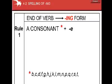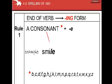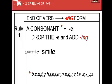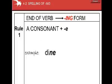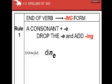Rule number one: a consonant plus E. In this case, what happened? We drop the E and add ING — smiling. A consonant plus E — for example, 'time' — we drop the E and add ING.